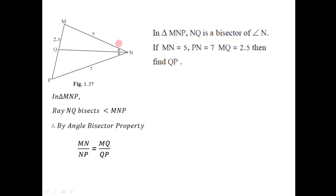So if we take MN in the numerator for the first ratio, the second ratio should also have MQ in the numerator. We have MN by NP is equal to MQ by QP, and we know three of the four values. MN is 5, NP is 7, and MQ is 2.5; we need to find QP.